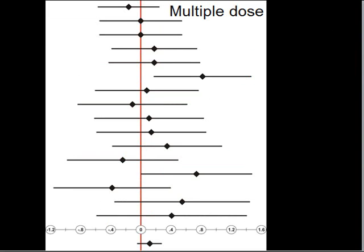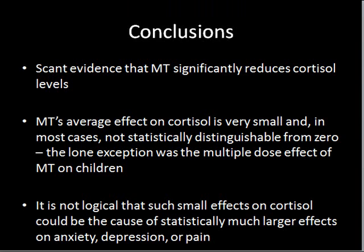Here is the depiction of the multiple dose effect. This contains a larger number of studies, but the graphic is interpreted in the same way, and the result is essentially the same. The average effect is about 15 hundredths of a standard deviation with a very similar confidence interval. We included results calculated from cortisol measured in plasma, saliva, and urine, with more detail provided in the report.